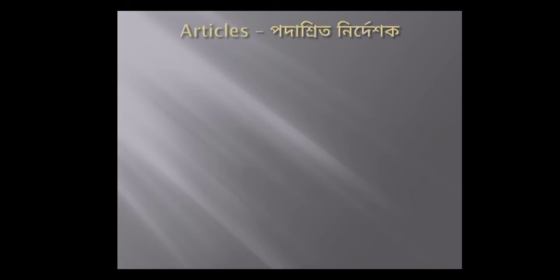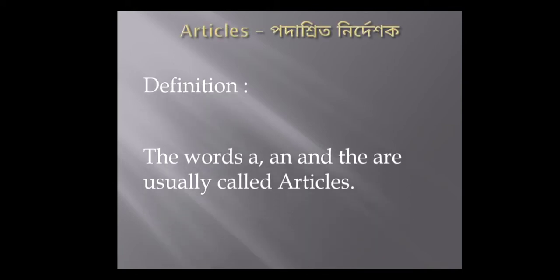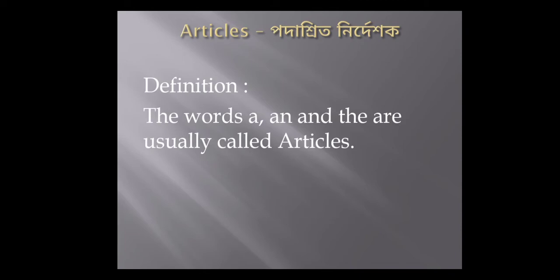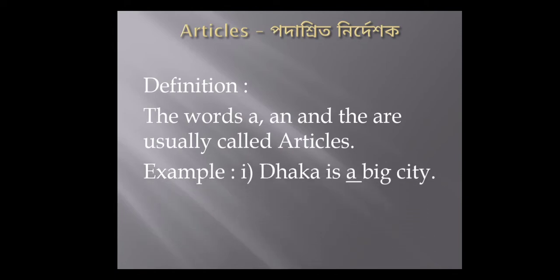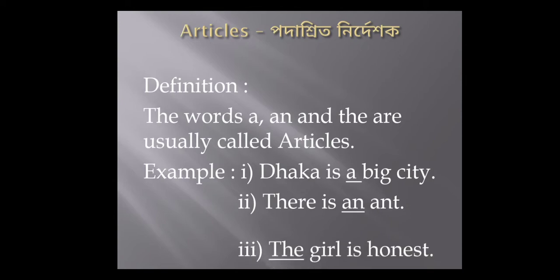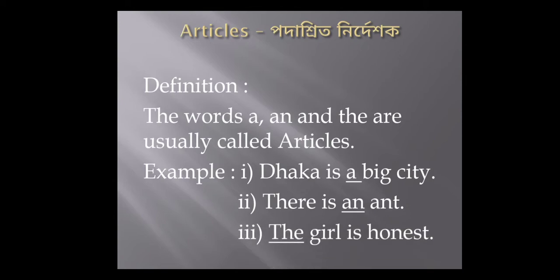What is called articles? The words a, an, and the are usually called articles. For example: Dhaka is a big city. There is an ant. The girl is honest.